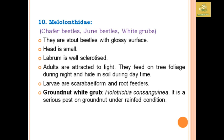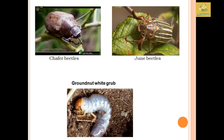Melolonthidae comprises chafer beetles, June beetles, and white grubs. An example is the groundnut white grub, Holotrichia consanguinea, a serious pest of groundnut under rain-fed conditions. They are stout beetles with a glossy surface. The labrum is well sclerotized. Adults are attracted to light, feed on tree foliage during night, and hide inside soil during the daytime.